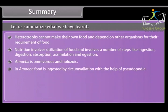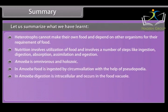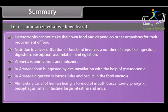In amoeba, food is ingested by circumvallation with the help of pseudopodia, and digestion is intracellular, occurring in the food vacuole. The alimentary canal of human beings is formed of mouth, buccal cavity, pharynx, esophagus, small intestine, large intestine, and anus.